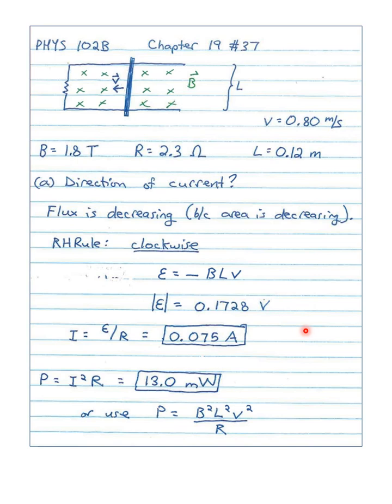The next question asks, at what rate is electric power generated? And so, we can say power is current squared times resistance, and get 13 milliwatts. By the way, we also have this derived in class and in the book, that it's B squared times L squared times V squared divided by R. And if you plug in all those values, you'll get 13 milliwatts as well.